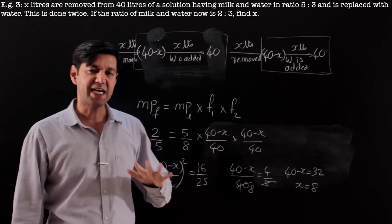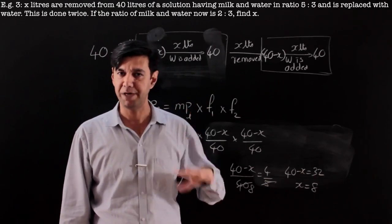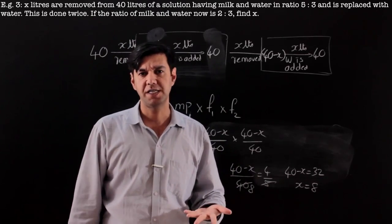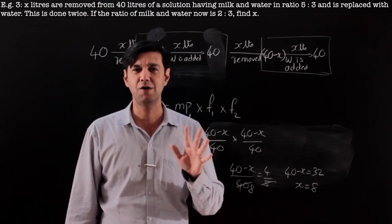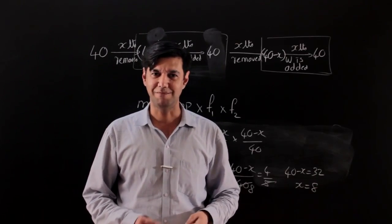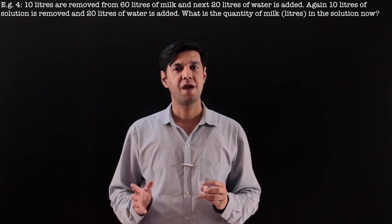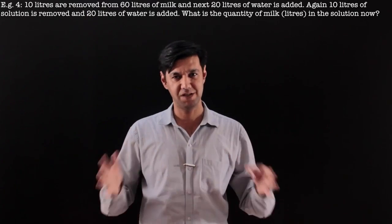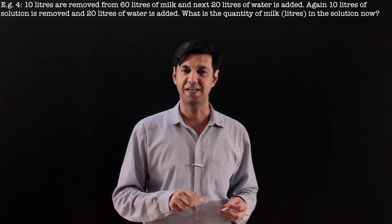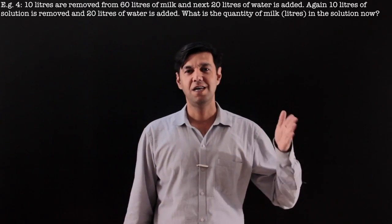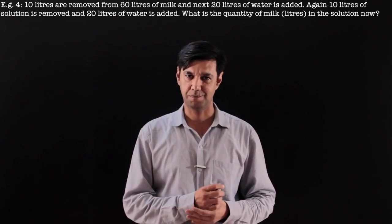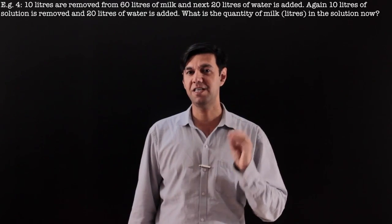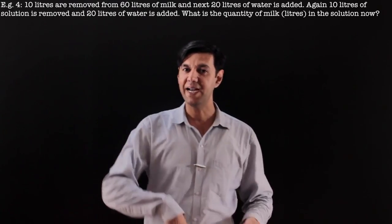CAT has not gone beyond the difficulty level of these three examples, but let's do two or three more questions with slight changes. Example four: 10 liters is removed from 60 liters of milk, and 20 liters of water is added. Again 10 liters is removed from the solution and 20 liters of water is added. What is the quantity of milk in the solution now?